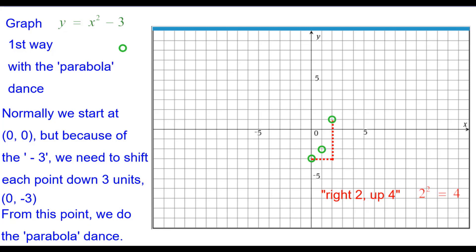Right 2 up 4, 2 squared is 4. Right 3 up 9 because 3 squared is 9. And then from that same vertex we'll go left 1 up 1 because the quantity of negative 1 squared is 1. Left 2 up 4, the quantity of negative 2 squared is 4. And left 3 up 9, the quantity of negative 3 squared is 9.